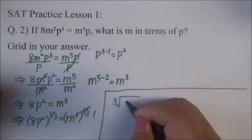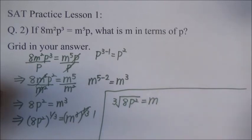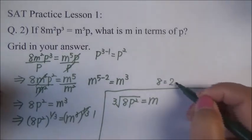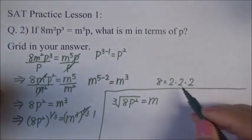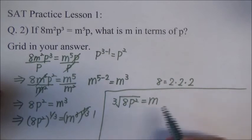Cube root 8P squared is equal to M. But, this is not done yet because 8 is 2 times 2 times 2. There are 3 2's. So, we can put 2, I mean 8 outside of the cube root.